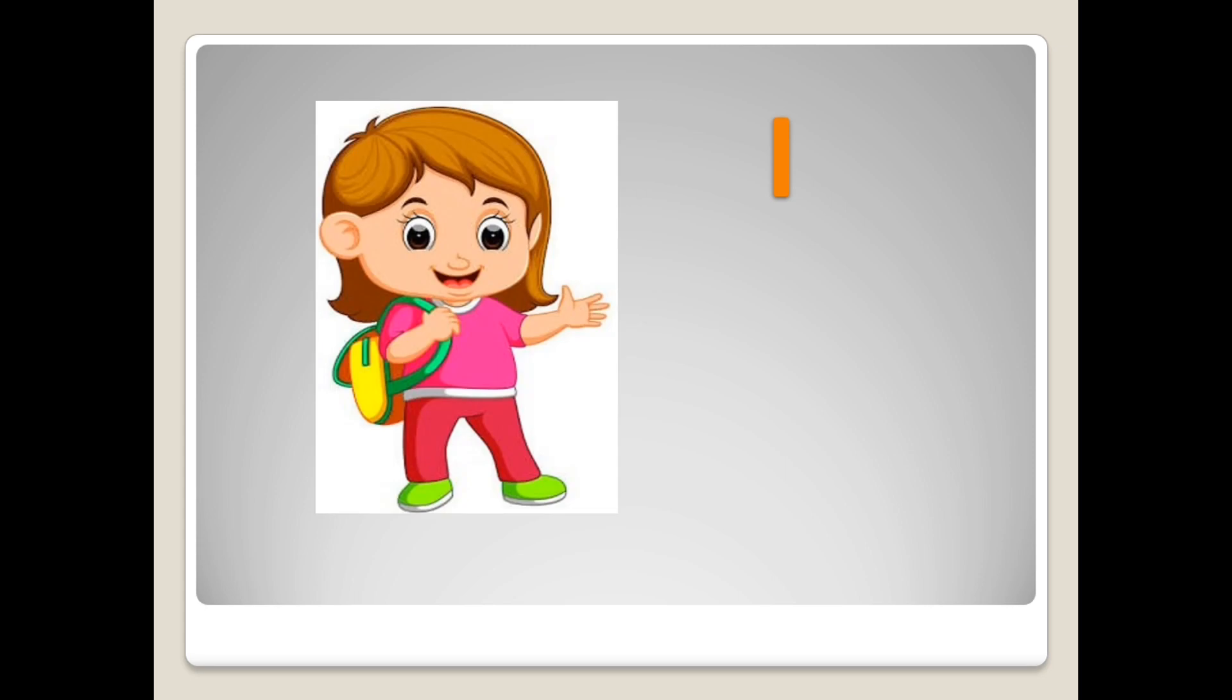I am Annie. I am a girl. Use I to talk about yourself. Like, I am seven years old. Am is always used with I.